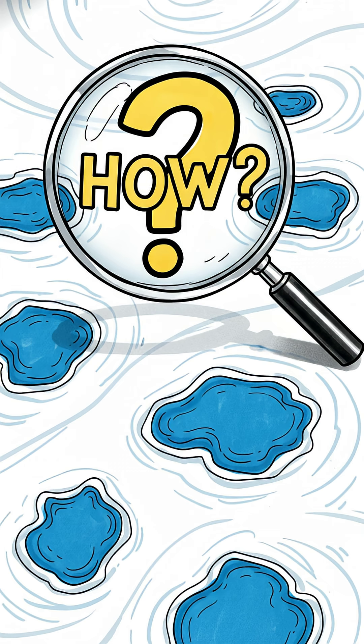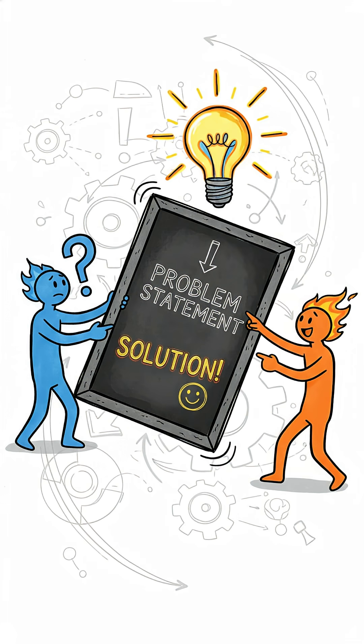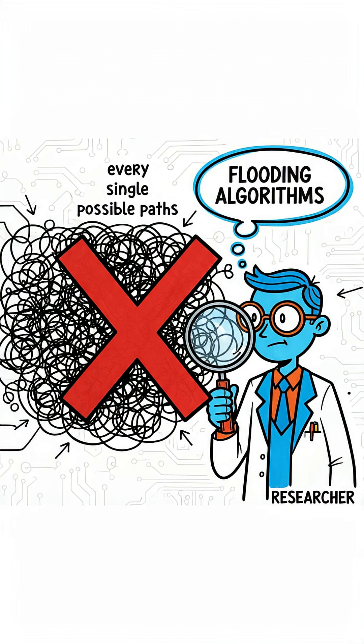So finally, how do you even map all these trapped areas? Well, you flip the problem on its head. Since checking every single possible path is basically impossible, researchers figured out a clever trick.